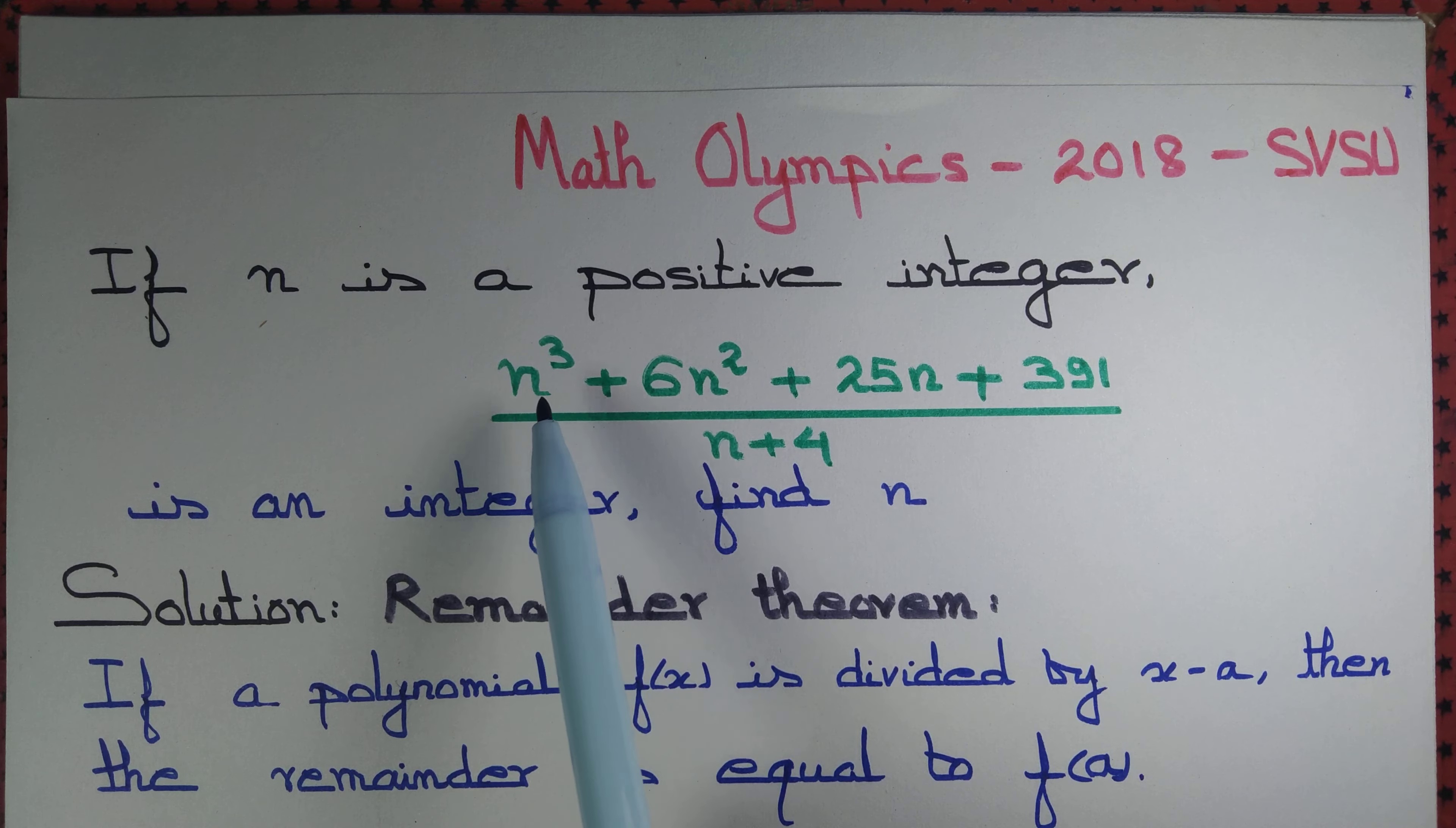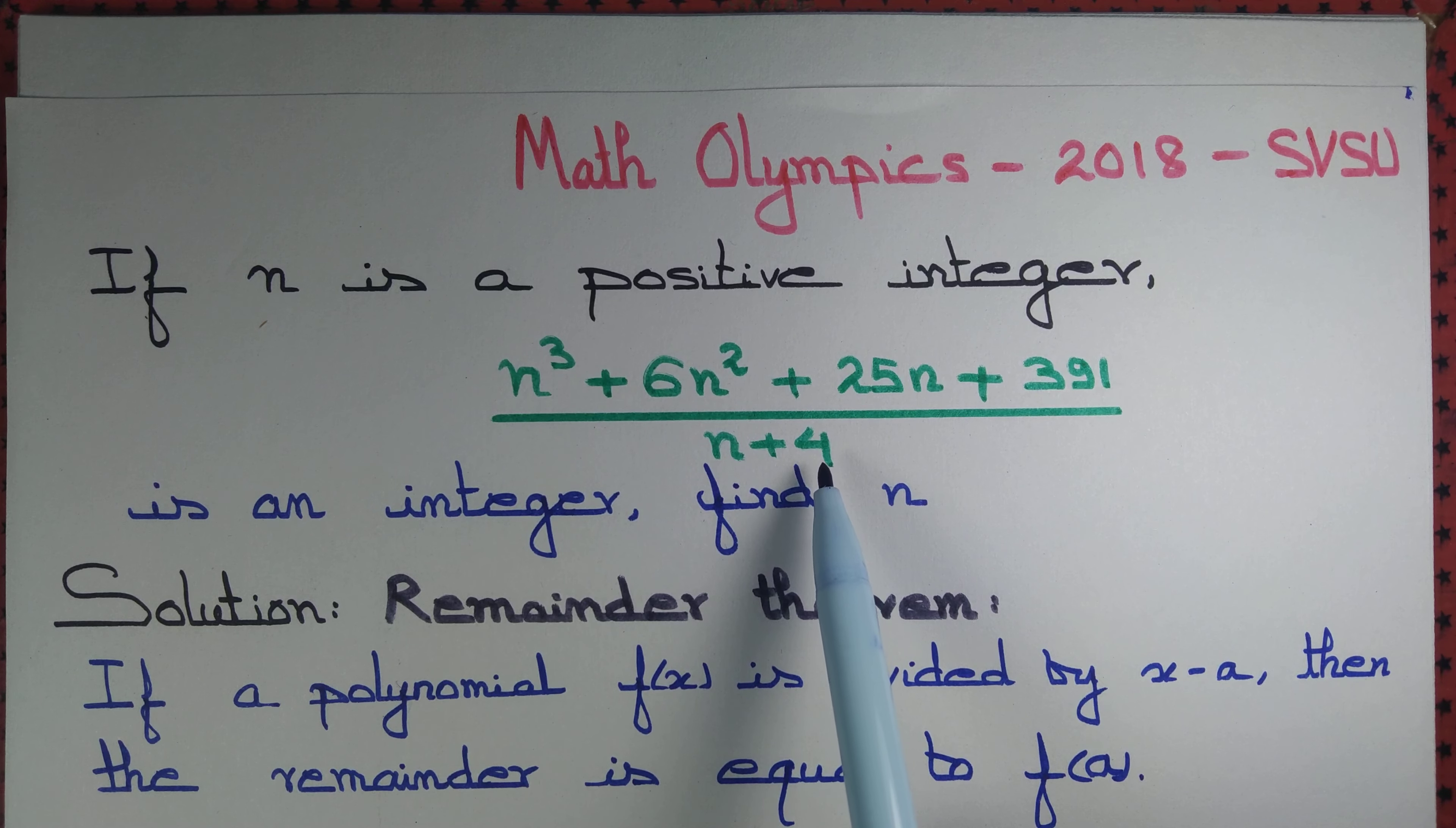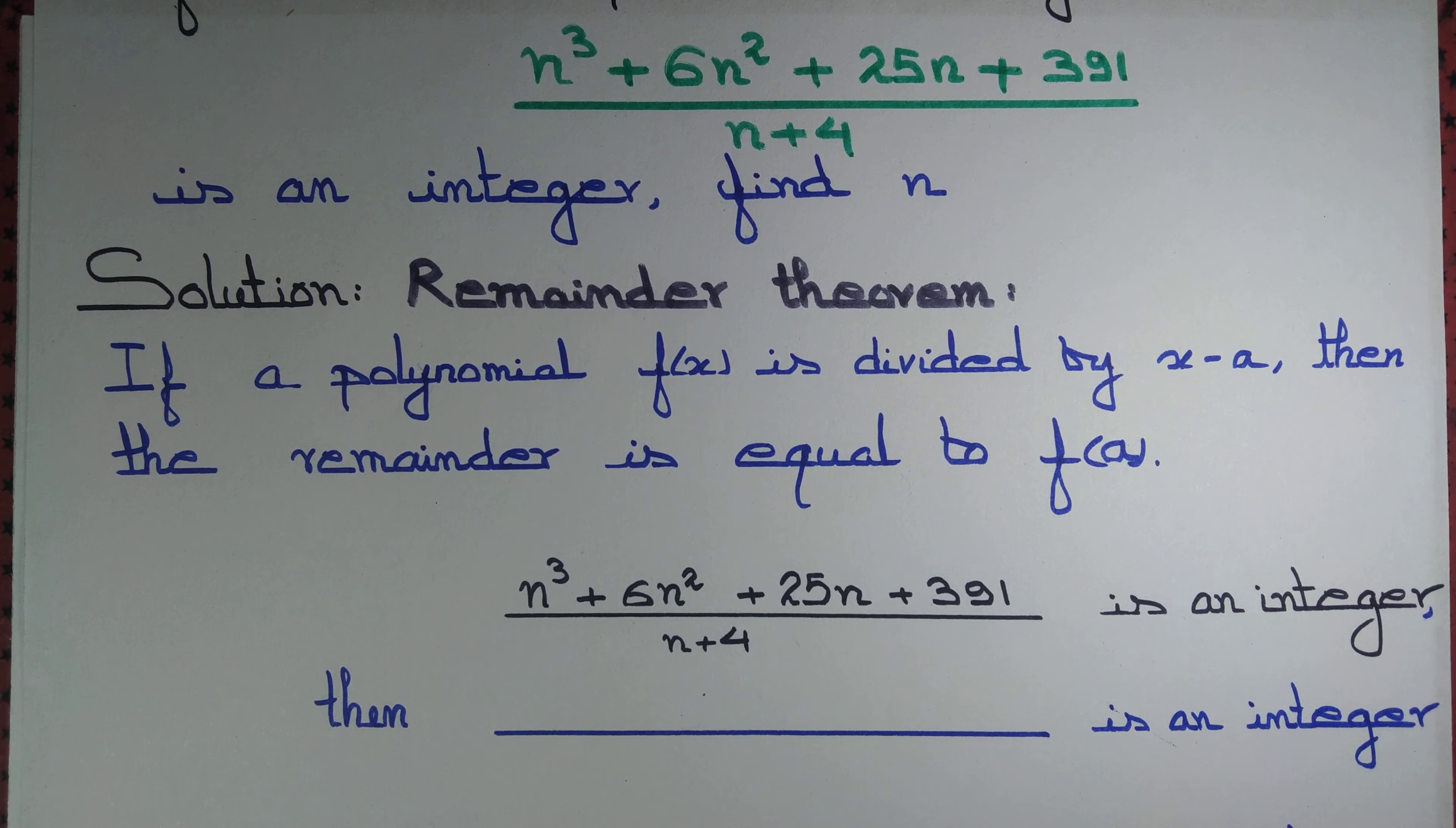Now we can regard n cubed plus 6n squared plus 25n plus 391 to be a polynomial in n, and n plus 4 is also a polynomial in n. So if we divide n cubed plus 6n squared plus 25n plus 391 by n plus 4 and get an integer, then it must happen that